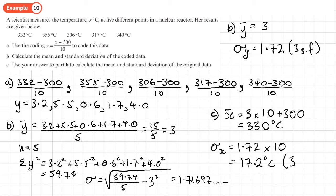That's rounded to three significant figures. If we took the full unrounded value and multiplied by 10 we'd get 17.16..., which rounds to the same 17.2.